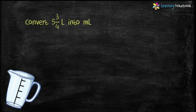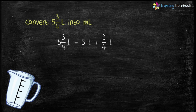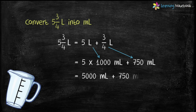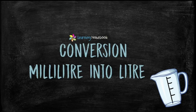Next question: convert 5 and three-quarters liters into milliliter. Five and three-quarters liters means 5 liters plus three-quarters liter. Five liters equals 5000 ml (multiplying by 1000), and three-quarters liter is 750 ml. So 5000 plus 750 equals 5750 milliliter.